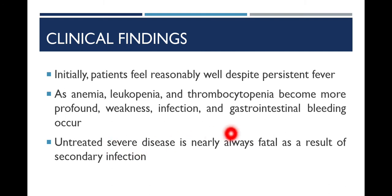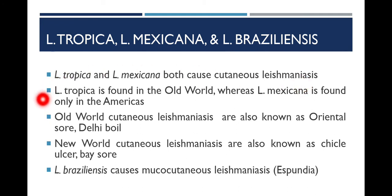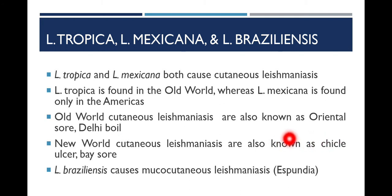Leishmania tropica and Leishmania mexicana both cause cutaneous leishmaniasis, meaning they cause leishmaniasis only in the skin. Leishmania tropica is found in the Old World, whereas Leishmania mexicana is found only in the Americas, known as the New World. Old World cutaneous leishmaniasis is also known as oriental sore or Delhi boil, while New World cutaneous leishmaniasis is known as chiclero ulcer or bay sore.